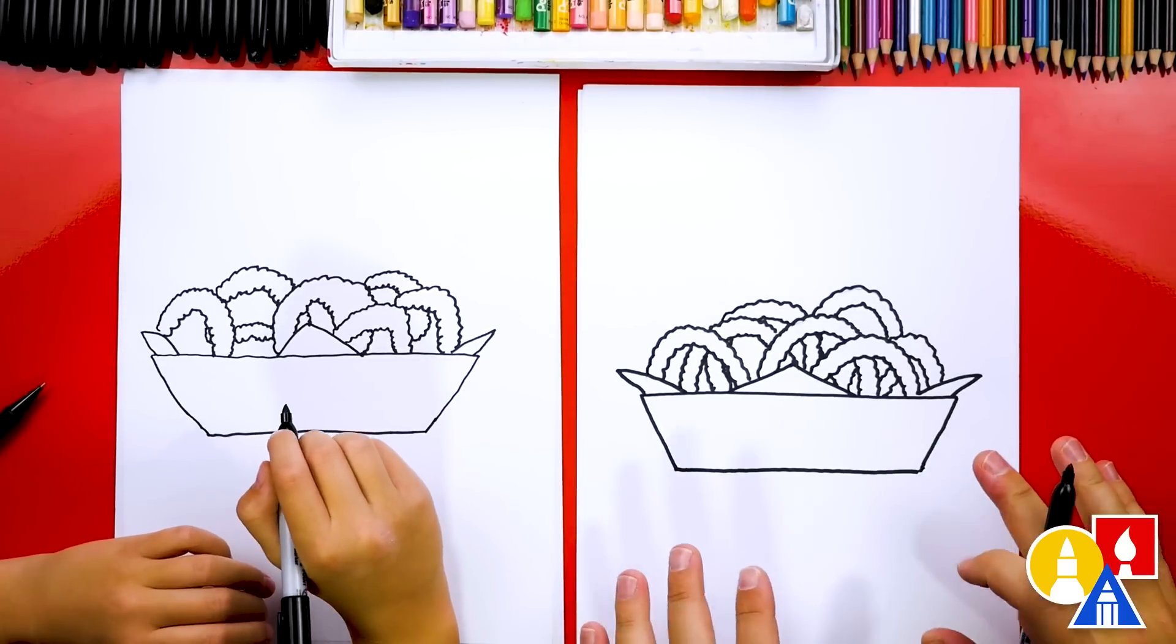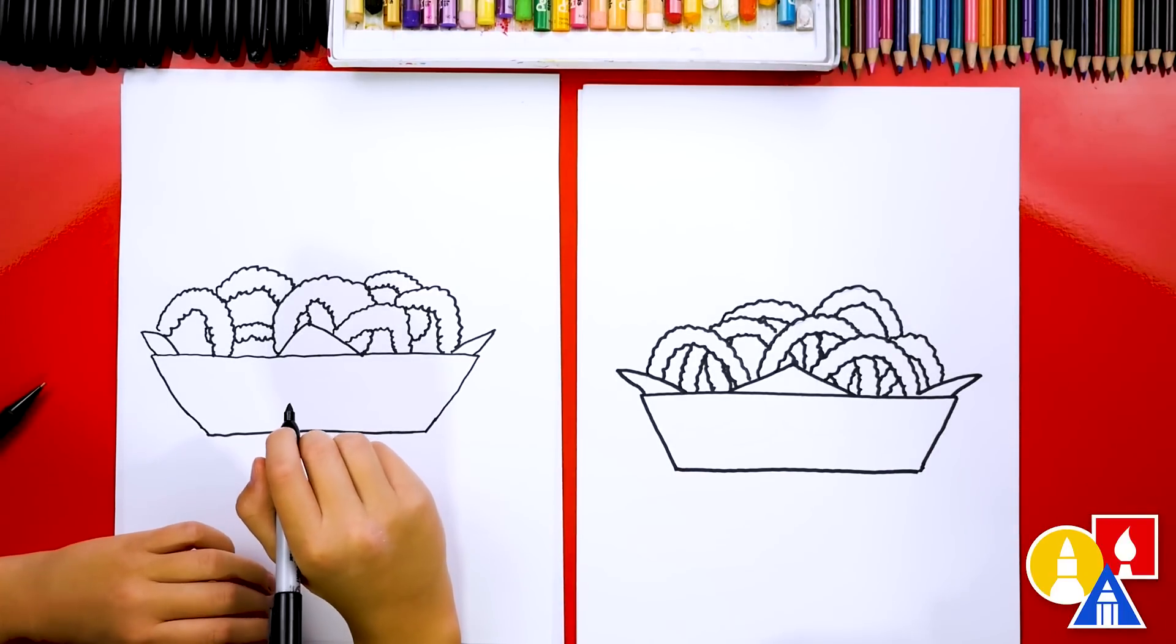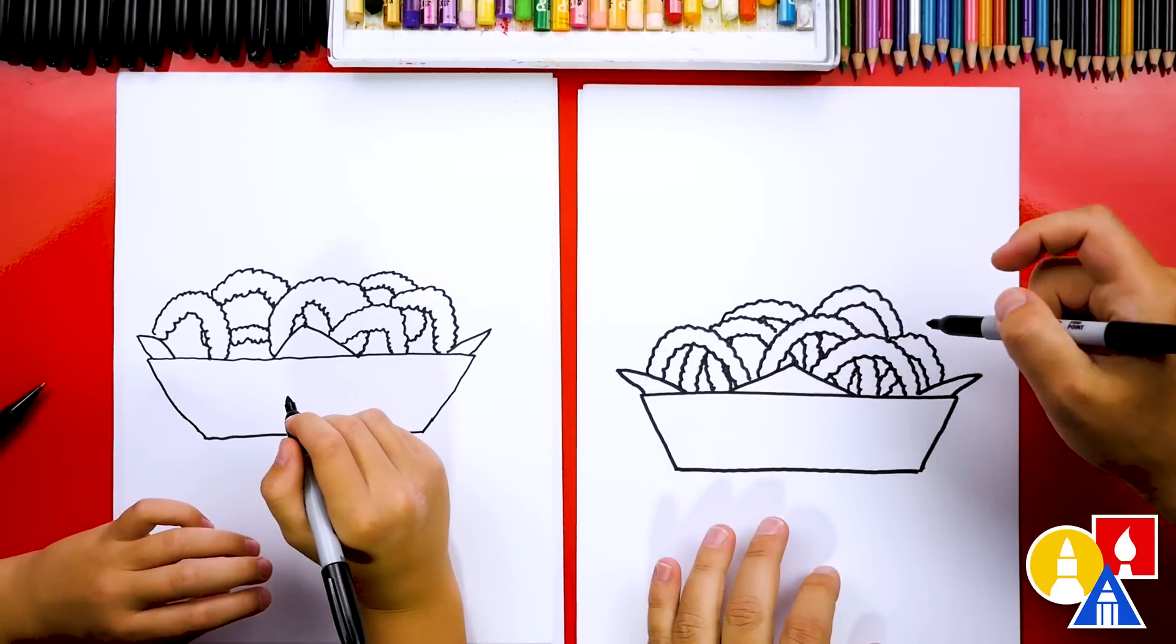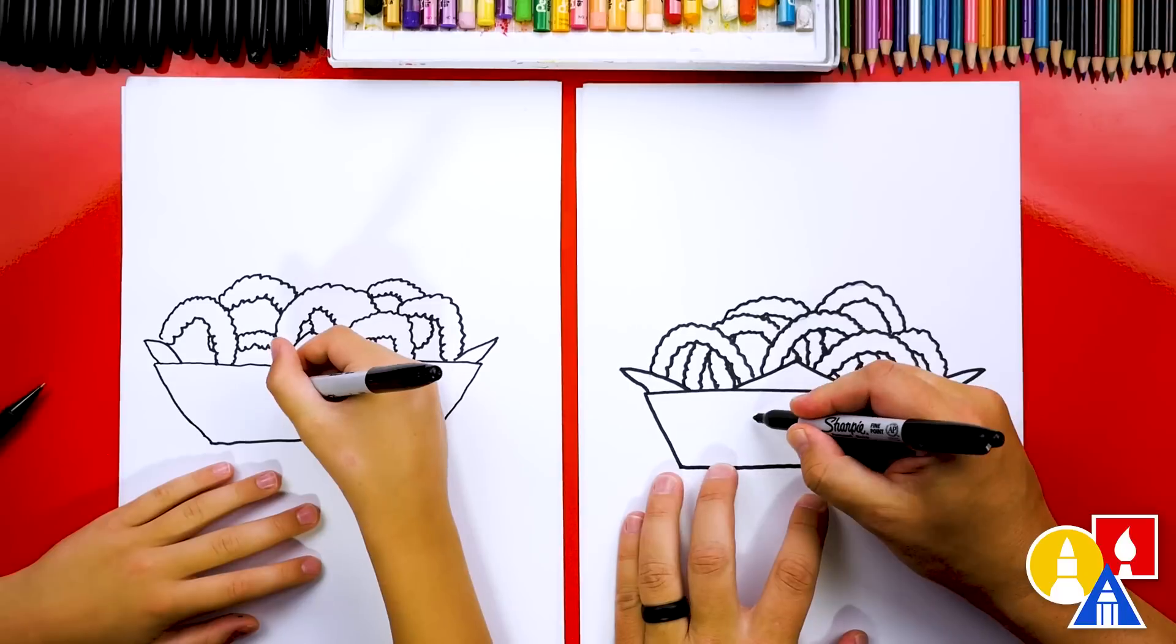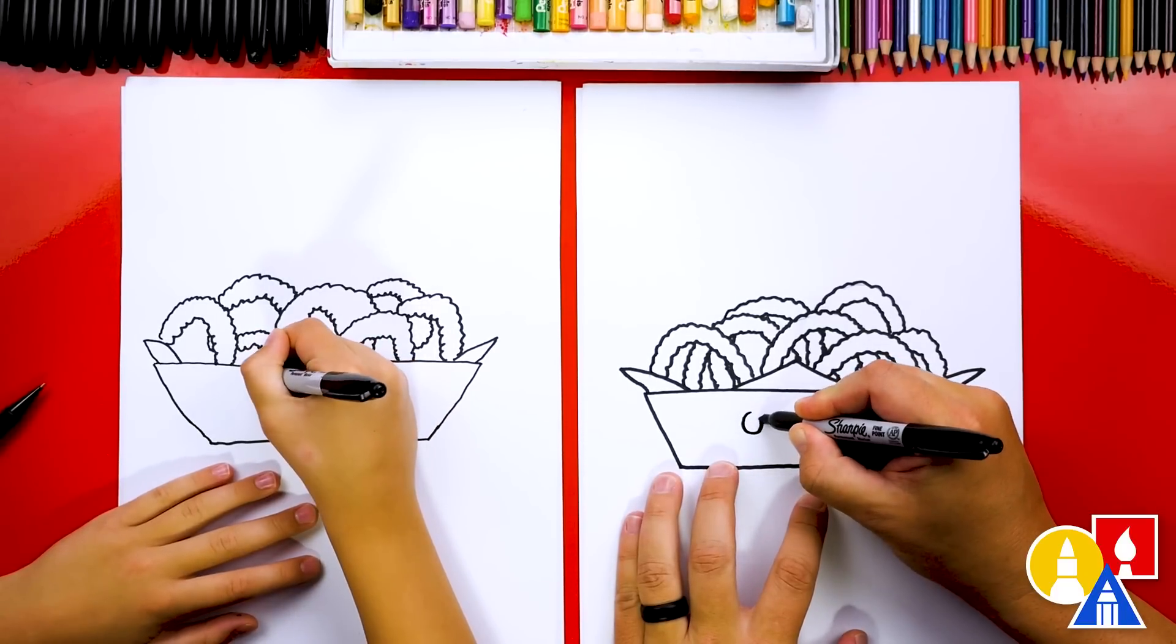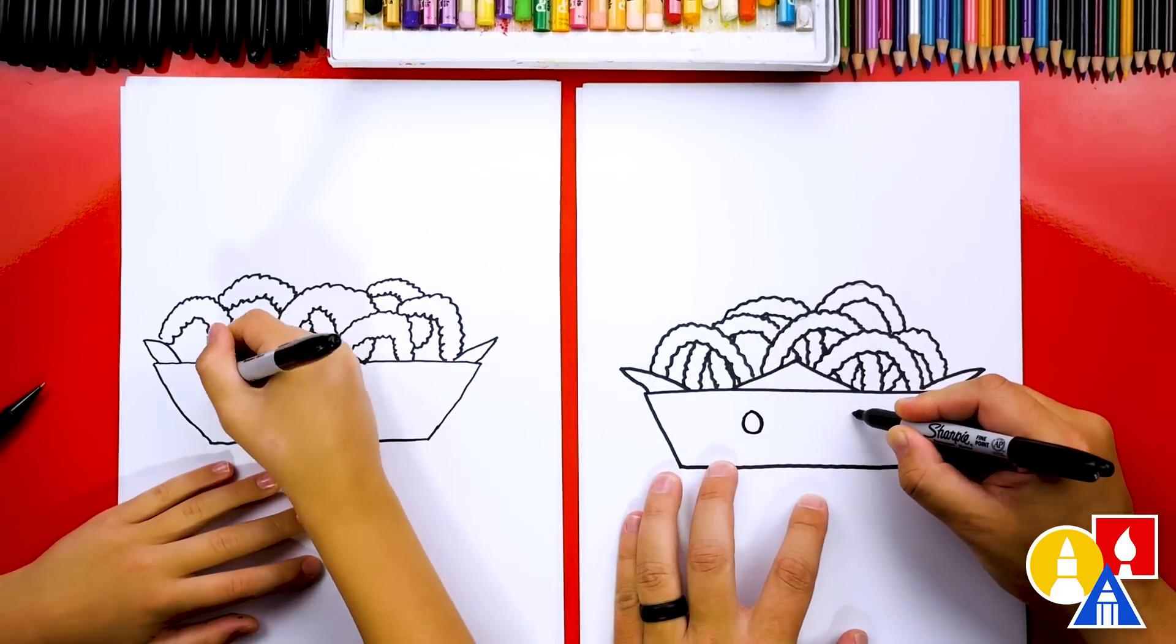All right. Should we do it? Mm-hmm. You can add any funny face you want to your onion rings. You could even change it so each of the onion rings have a funny face or just add one to the tray. Yeah. I'm going to add the circles for the eyes. What are you going to add to yours?